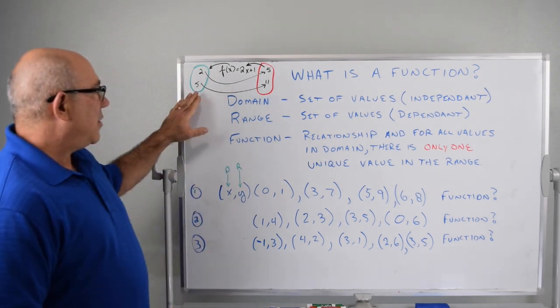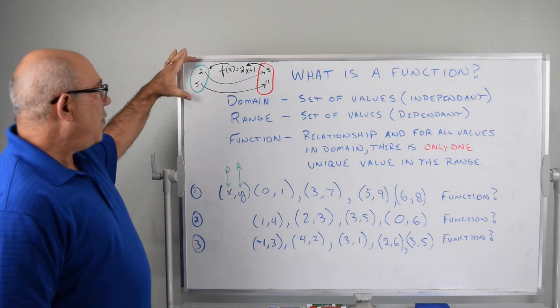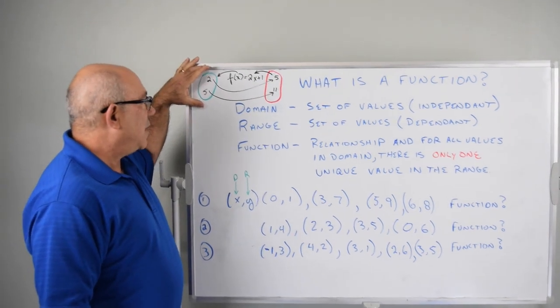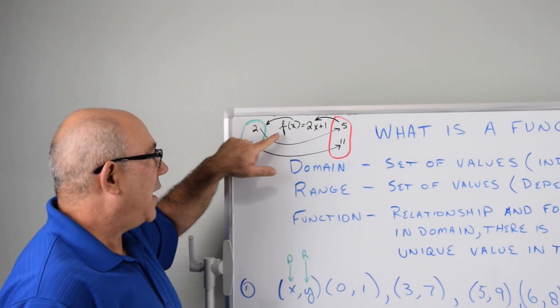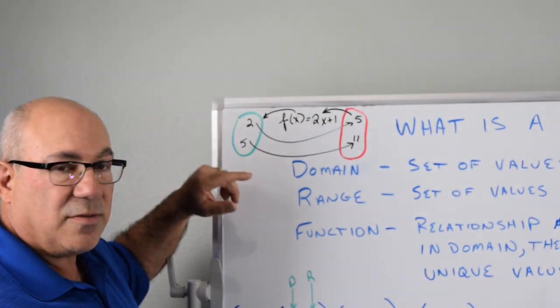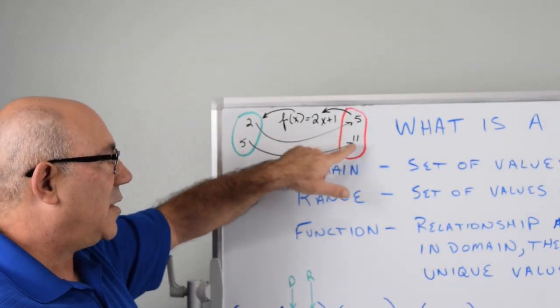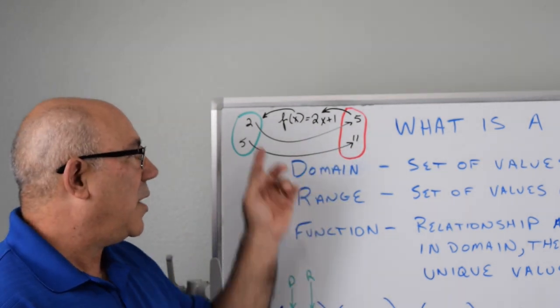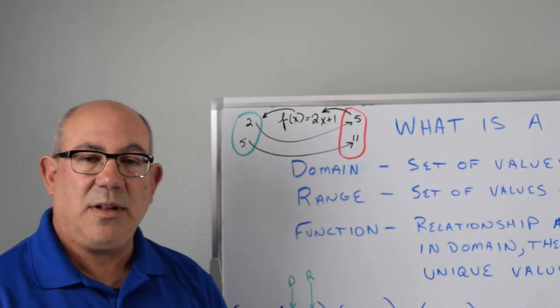So let's start with this little picture. If we have a set of values up here that are in the green region, we'll call that f of x, that's the notation for a function. And we have another set of values in the red area that are out there, and we want to know is there a relationship between these two.